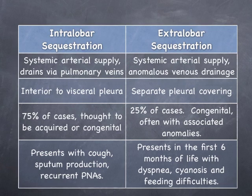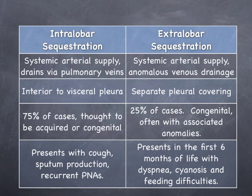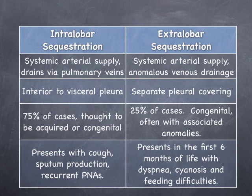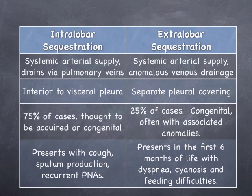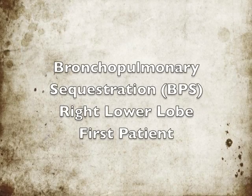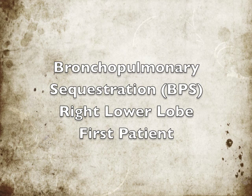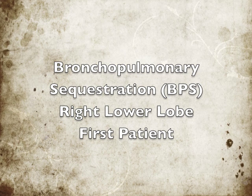Though pulmonary sequestration is classically divided into these two categories, they often will have elements of both and can be thought of as occurring along a spectrum of pulmonary anomalies, with normal vessels supplying abnormal lung at one end and abnormal vessels supplying normal lung at the other. Now I'd like to share two cases that illustrate pulmonary sequestration.